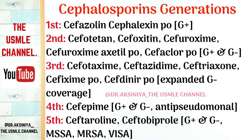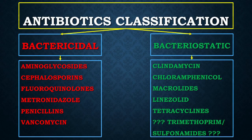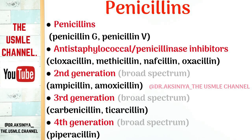Next on our bactericidal list are the fluoroquinolones: ciprofloxacin, levofloxacin, moxifloxacin, ofloxacin, and delafloxacin. Next we have metronidazole, and then the penicillin drugs. We have penicillin G — like penicillin benzathine G which is an IM formulation — and penicillin V which has oral administration. The antistaphylococcal penicillins inhibit penicillinase, also known as transpeptidase enzyme, and these are not used for methicillin-resistant strains of Staph aureus, commonly known as MRSA.